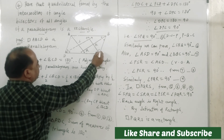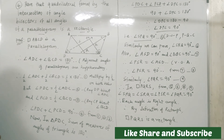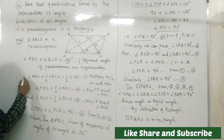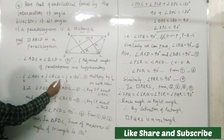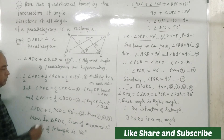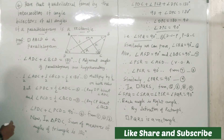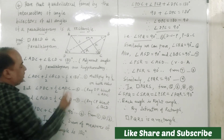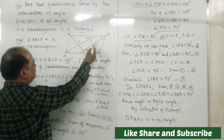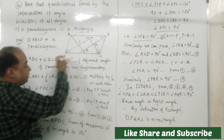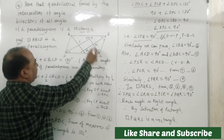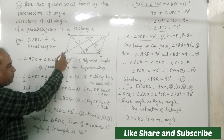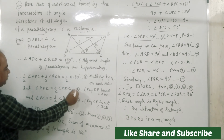Angle ADC plus angle BCD is equal to 180 degrees. Multiplying both sides of this equation by one-half: one-half angle ADC plus one-half angle BCD equals 90 degrees — this is equation number one. Since ray DP and ray CT are the angle bisectors, an angle bisector divides the angle into two equal parts — that is, half of the given angle. These give us statements number two and number three.